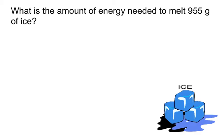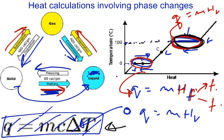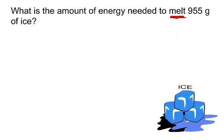What is the amount of energy needed to melt 955 grams of ice? You can be given a problem just like this, so we look for keywords, and this time, it says melting. So we know from experience, melting takes place over here, there's no change in temperature, so we cannot use Q equals MC delta T.